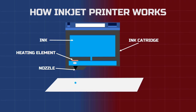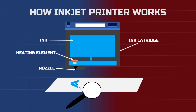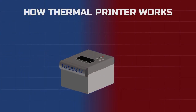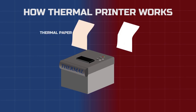The inkjet printer sprays thousands of these small droplets onto the paper to form the image or text. Now let's look at the working of a thermal printer. Unlike the inkjet printer, it does not contain any cartridge. Instead, the paper itself is special — it is sensitive to heat, so we call it thermal paper.